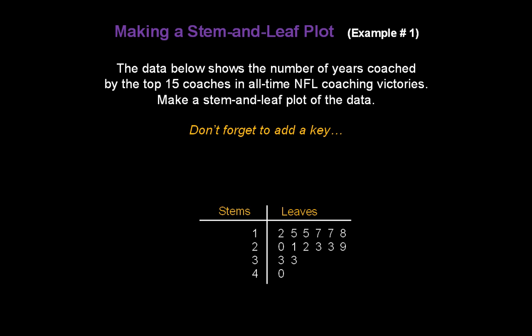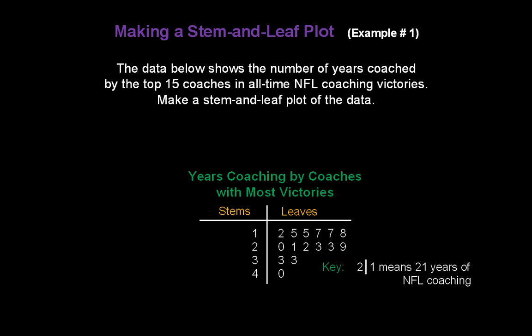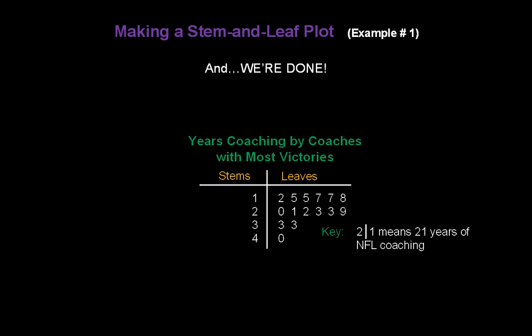Now, don't forget to add a key so people know what you're reading here. 2 vertical bar 1 means 21 years of NFL coaching. And don't forget to add a title: Years coaching by coaches with the most victories. And we're done. There's your first stem-and-leaf plot.